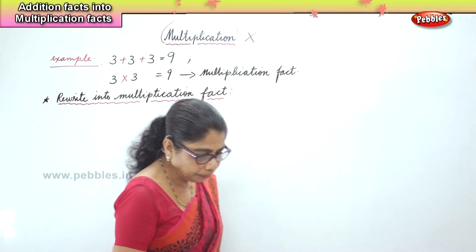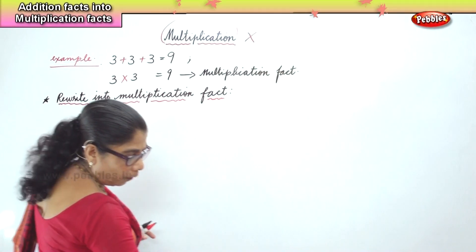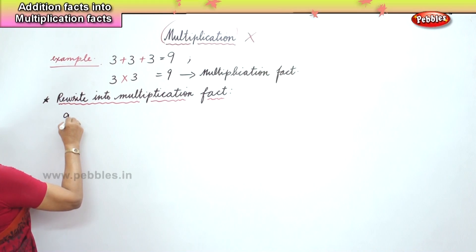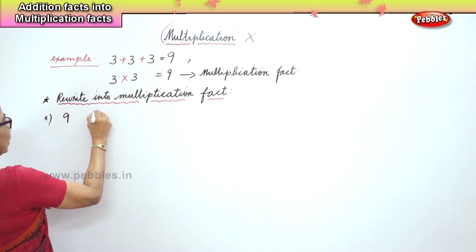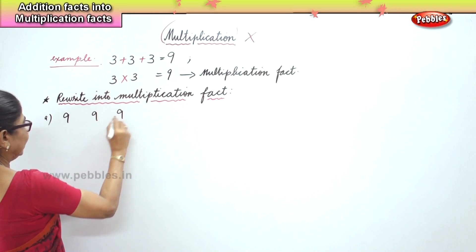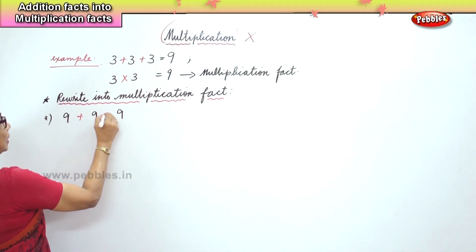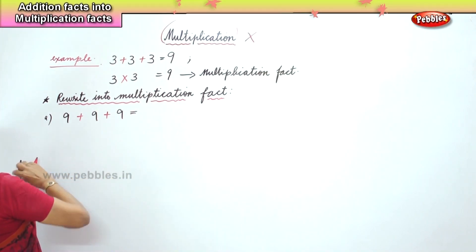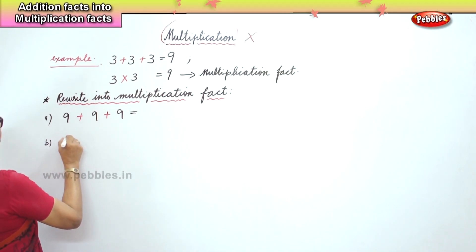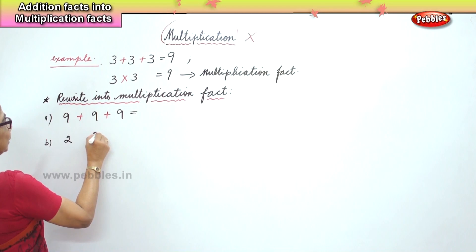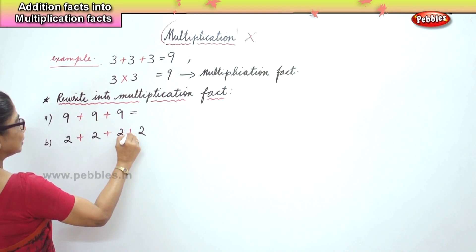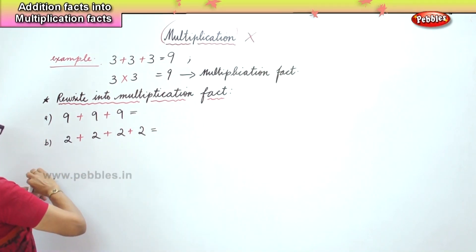OK, now here we go. We have 9 plus 9 plus 9. Then 2 plus 2 plus 2 plus 2 plus 2 — 2 plus 2 gives you what?